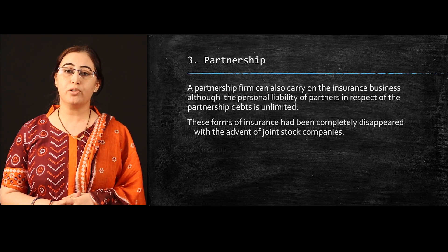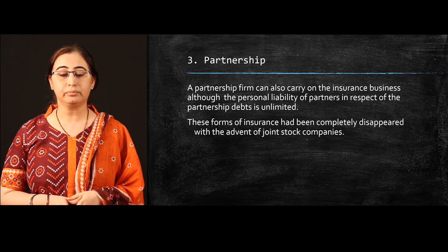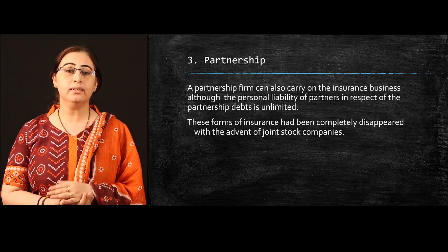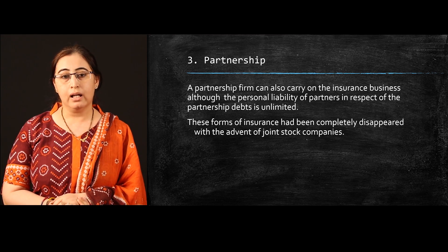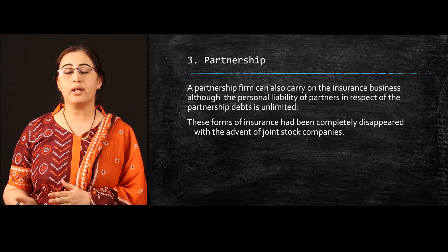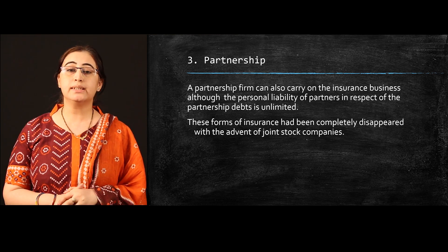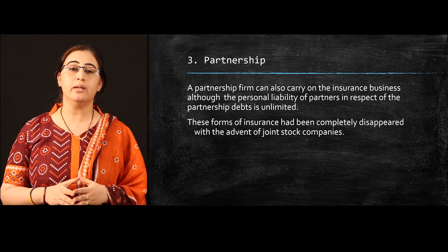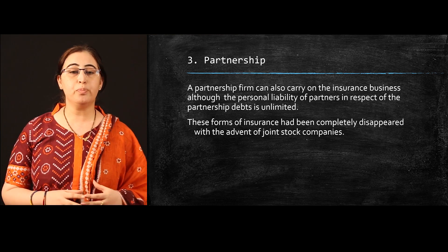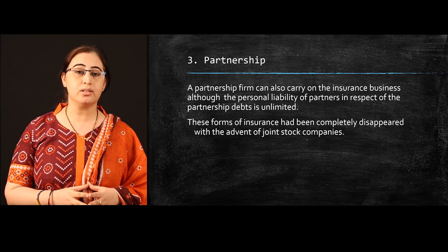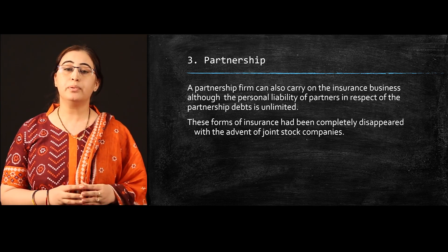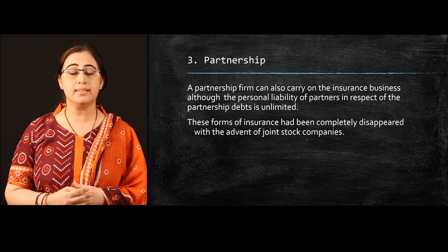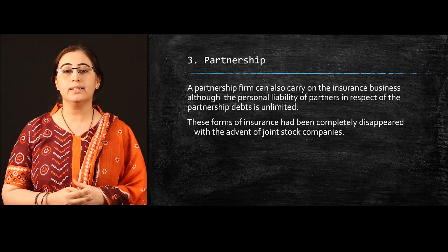The third type is in the form of partnership. We are well aware about the partnership business where more than two people come together to start a business. A partnership firm can also carry out the business of insurance, but the personal liabilities of the partners in respect of the partnership are unlimited. So when two or three people come together and start a business of insurance, their personal liabilities are liable for the risk, making it a very risky business.